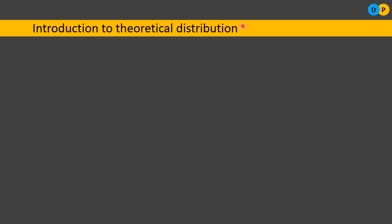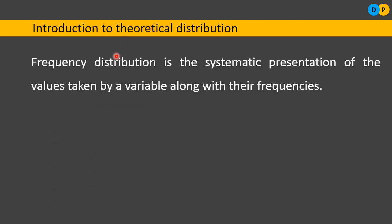In this chapter we will be discussing the distribution of frequency. Frequency distribution is the systematic presentation of values taken by a variable along with their frequencies. There may be n number of values, each observed a different number of times, and we represent them in a table systematically.